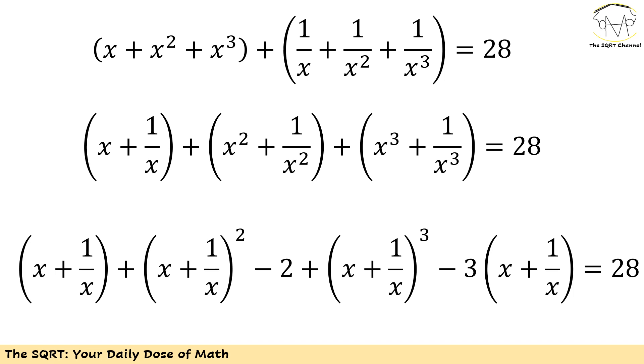Now I'm going to try to rewrite each term here based on x plus 1 over x. Obviously the first one is easy. For the second term which is x squared plus 1 over x squared, I'm going to rewrite it as x plus 1 over x to the power of 2 minus 2 times x squared times 1 over x squared which is 1.